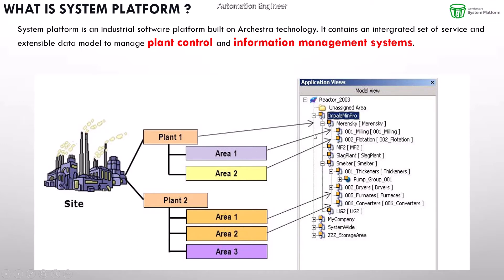We convert this to the system platform — it has the same structure. The whole factory maps to the site. Plant 1 maps here, and in Plant 1 we have the flotation area here — this is Area 1 and Area 2.